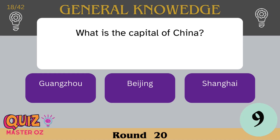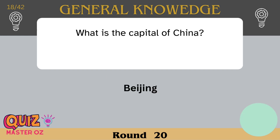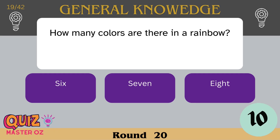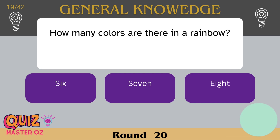What is the capital of China? Beijing. How many colours are there in a rainbow? Seven.